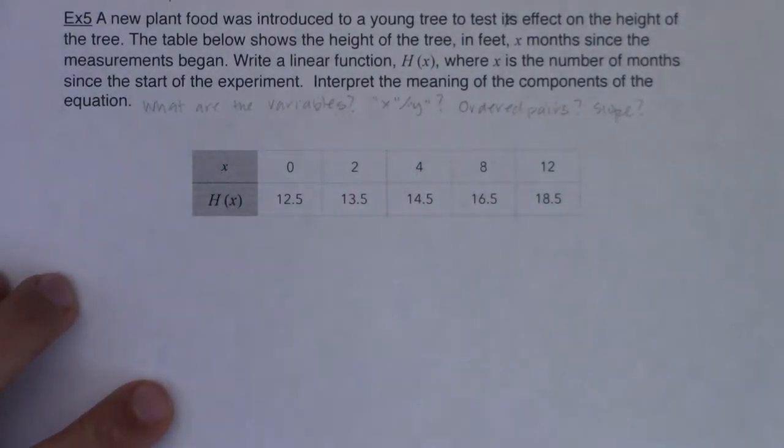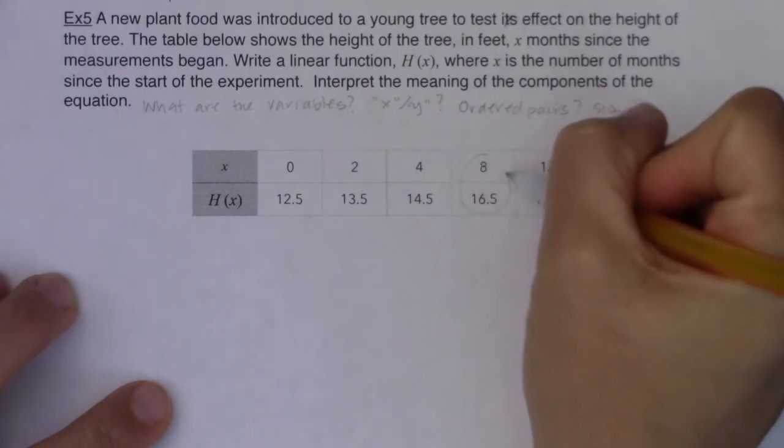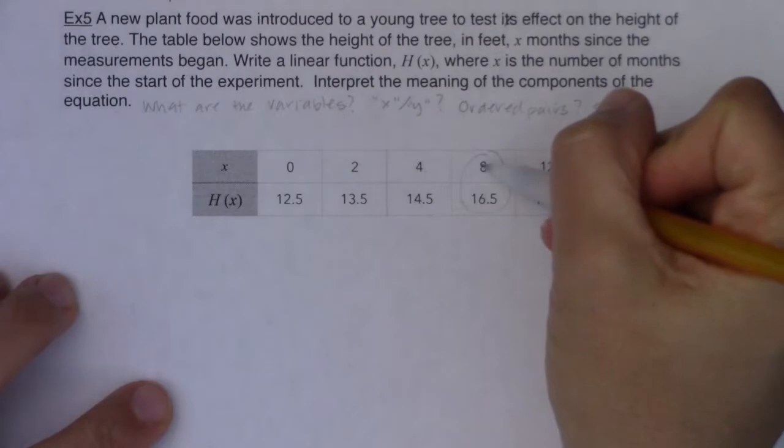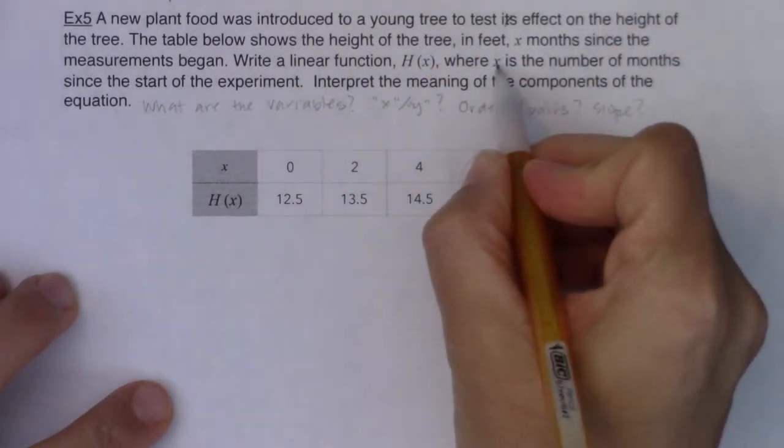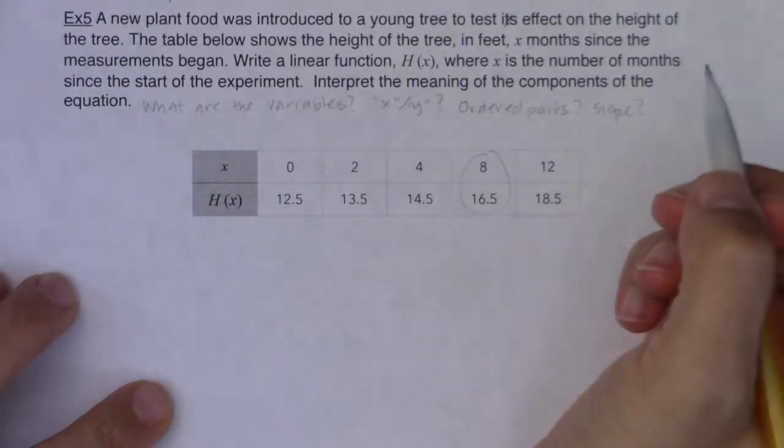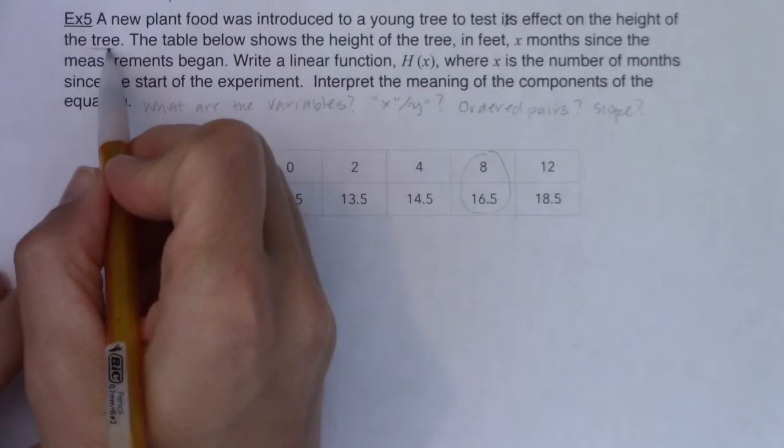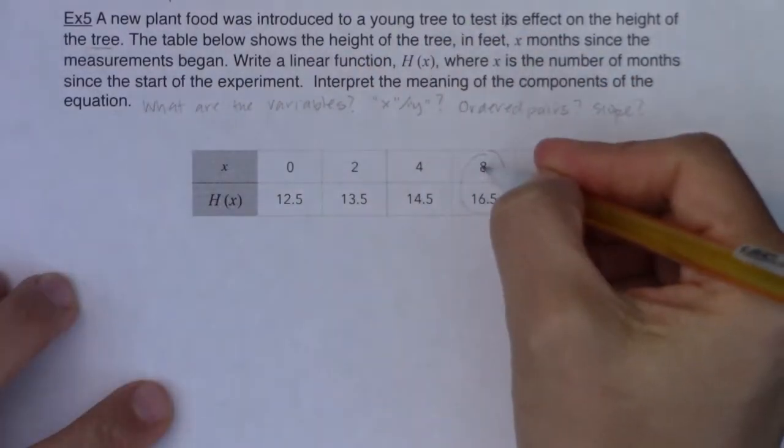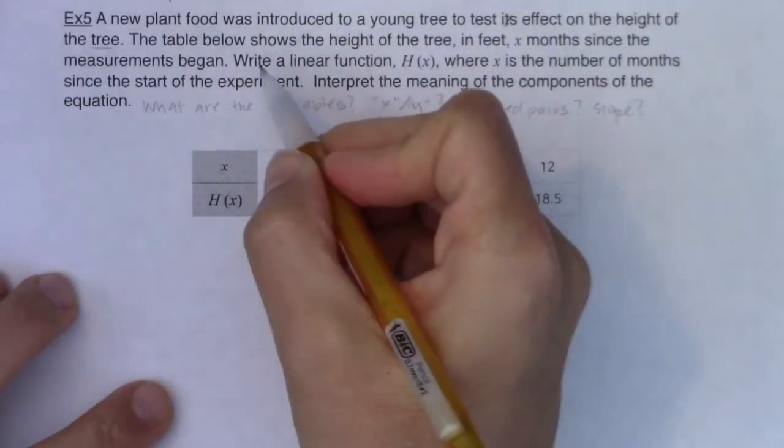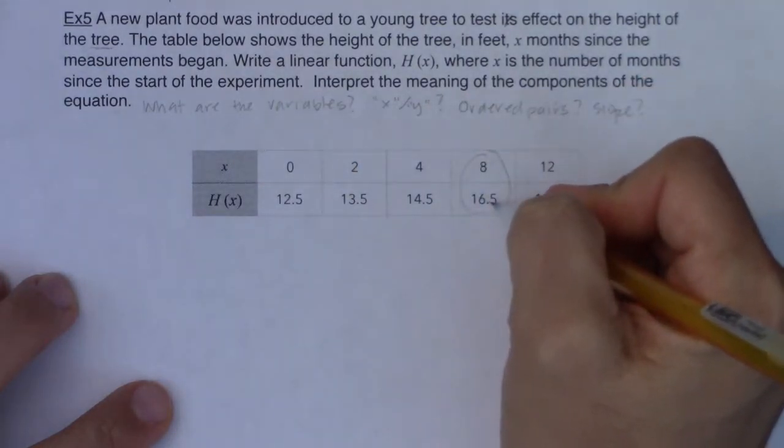And if you struggle with that, like in the word problem of it, just pick any ordered pair you see here. Let's just, I'm going to circle this one. All right, eight and 16.5. Let's see if we can figure out what eight represents and what 16.5 represents. Well, eight is an X value, right? And they told me right here, X is the number of months since the start of the experiment. So I got some plants, right? Or actually, I got a tree, excuse me. And they're trying some new plant food to make it grow. And apparently eight months since the measurements began. So eight months since I began this experiment, since the start of the experiment, I have this number 16.5.